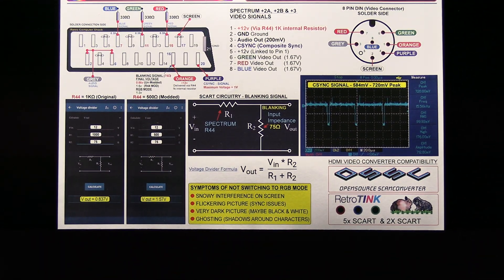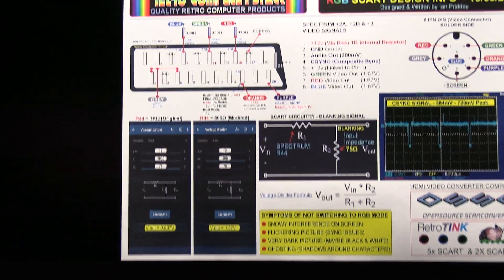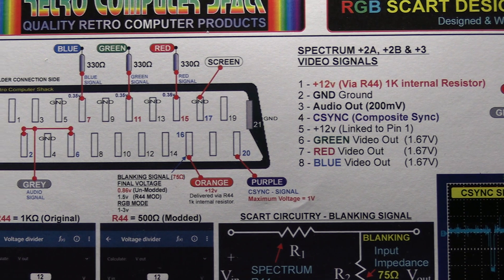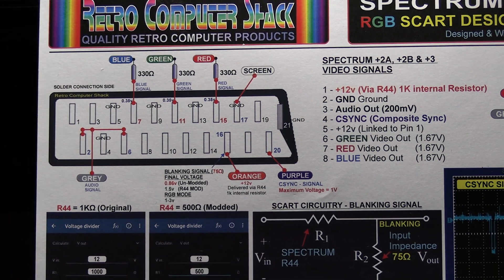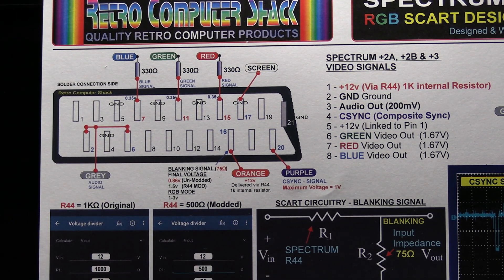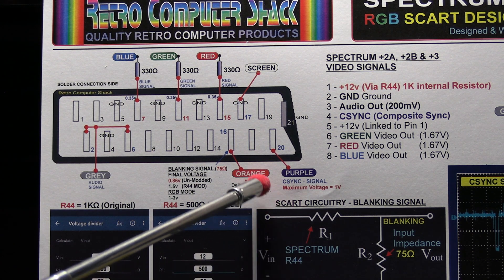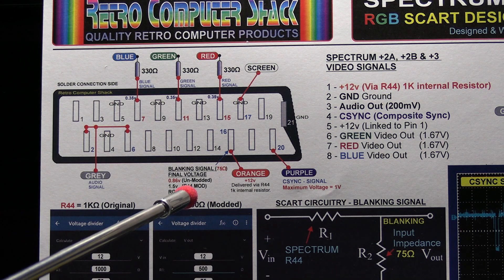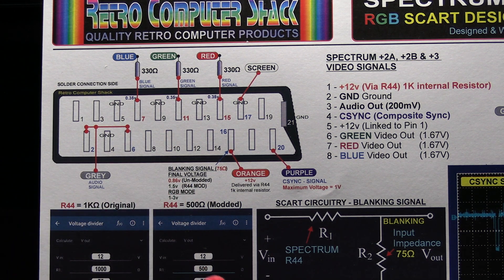The main problem with the Spectrum is that it can't supply a high enough voltage to pin 16, which is the blanking signal, which is there. I'll just explain what the blanking signal does. That'll probably be easiest.